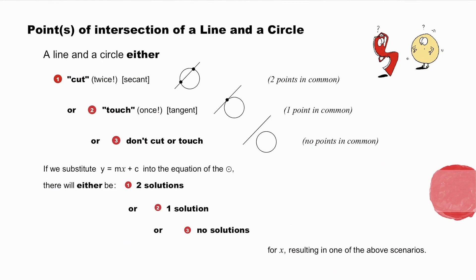Points of intersection of a line and a circle. A line and a circle either cut — and there are two points in common — or touch — and there is one point in common, in which case the line is tangent to the circle — or don't cut or touch, and there are no points in common. Solving their equations simultaneously will yield two solutions, one solution, or no solutions.